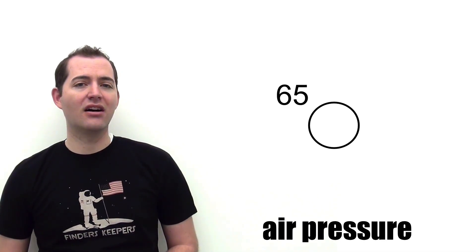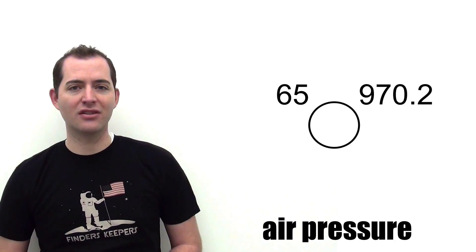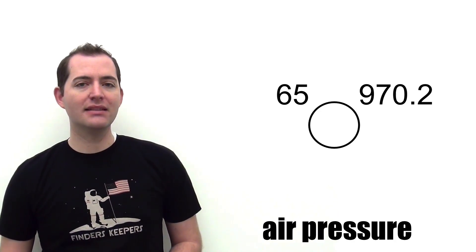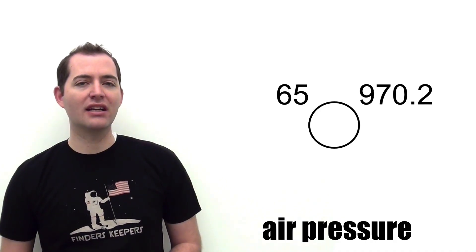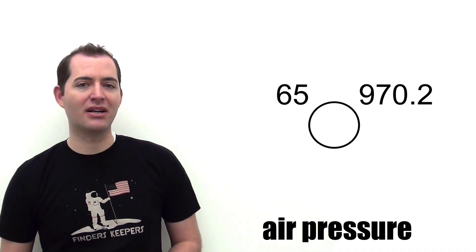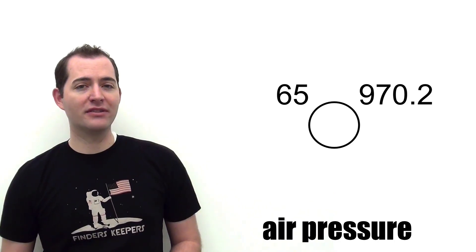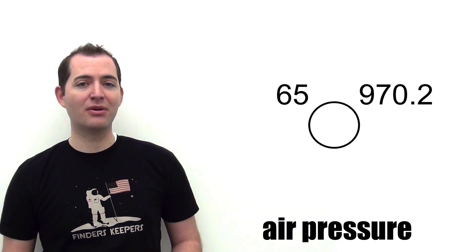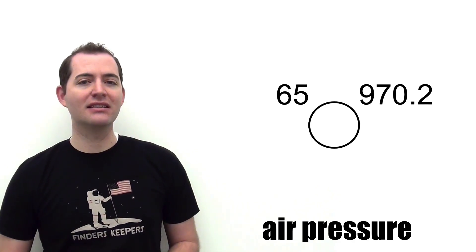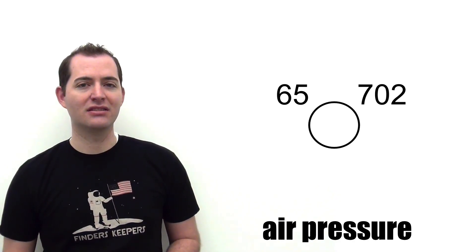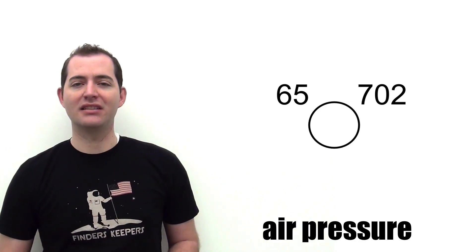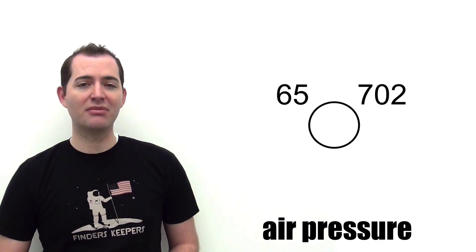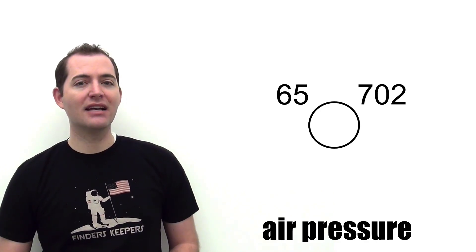Current air pressure is represented on the upper right side of the circle and is shown in millibars. This station model shows a current air pressure of 970.2 millibars. However, it's common for station models to further abbreviate the surface air pressure by dropping the decimal point as well as the leading 9 or leading 10 of the air pressure. This is done to save space on the station model, and our example of 970.2 millibars would be written 702.